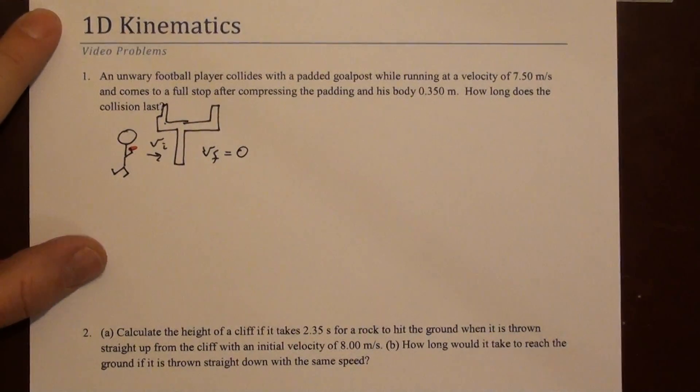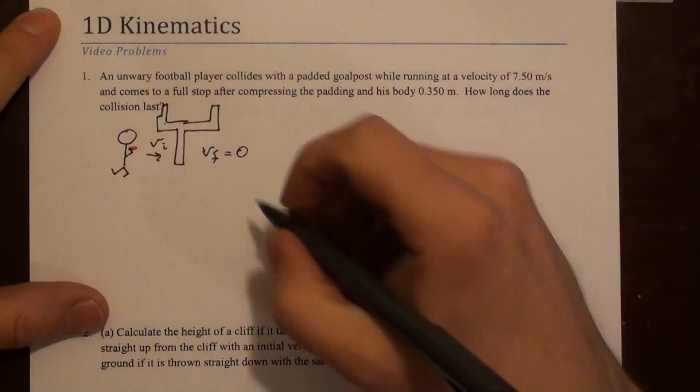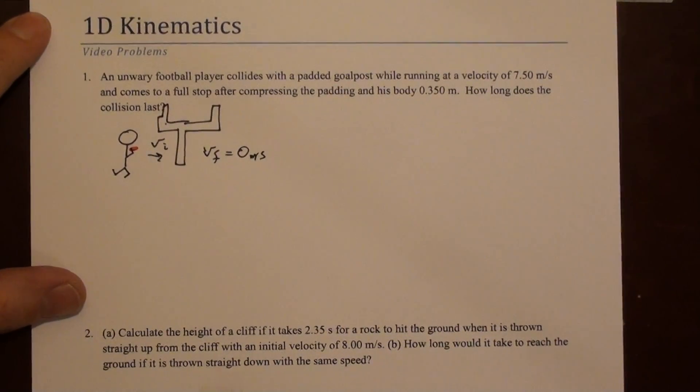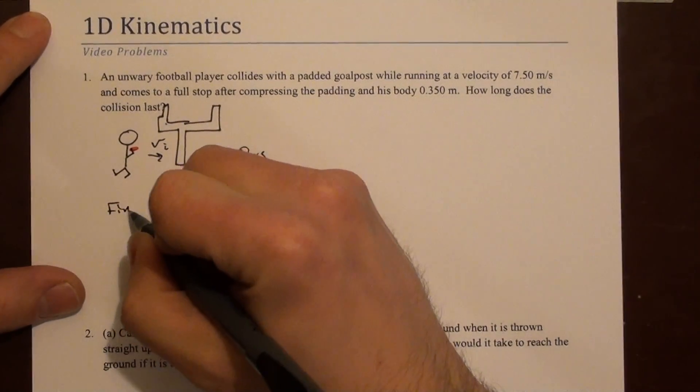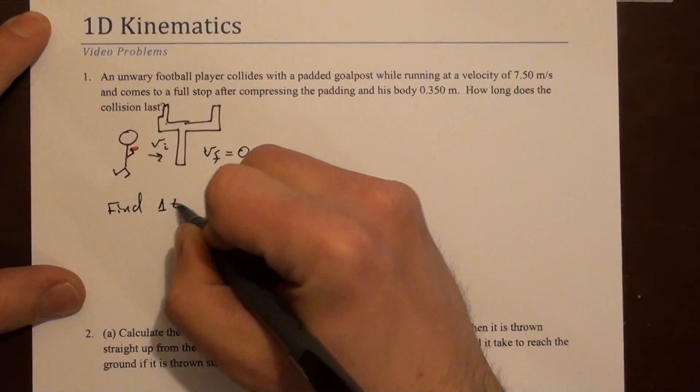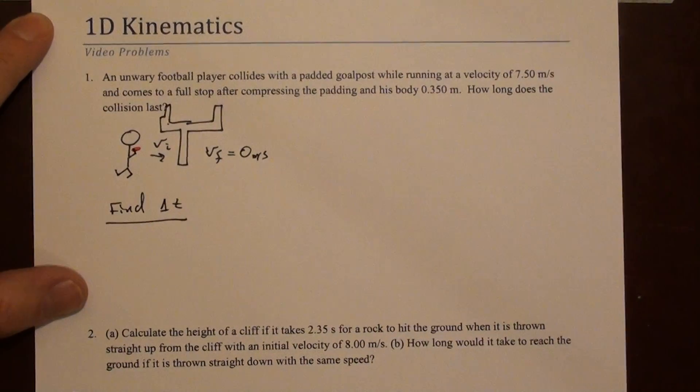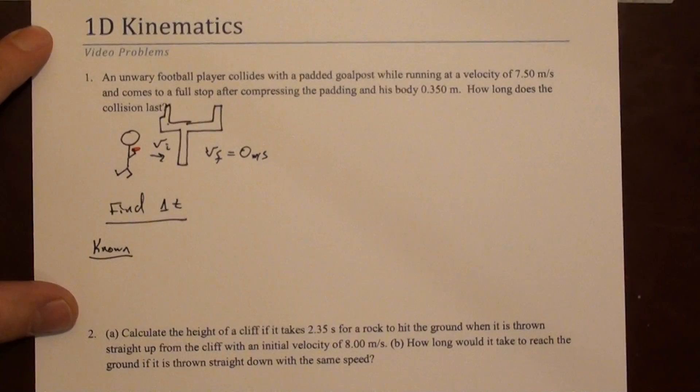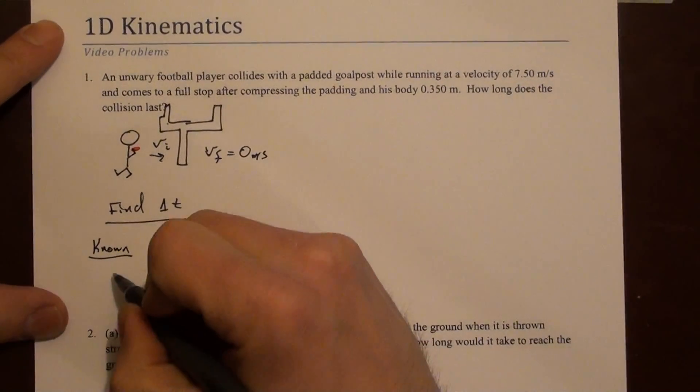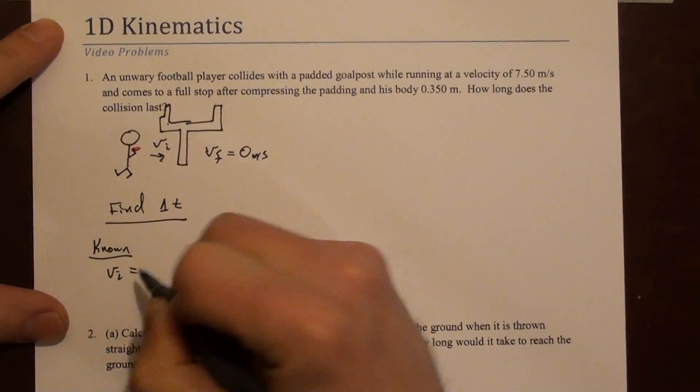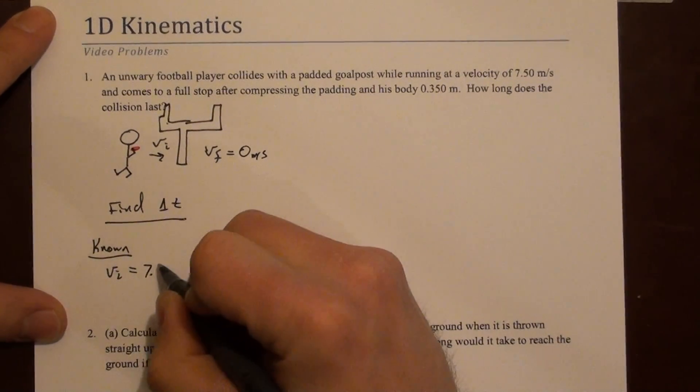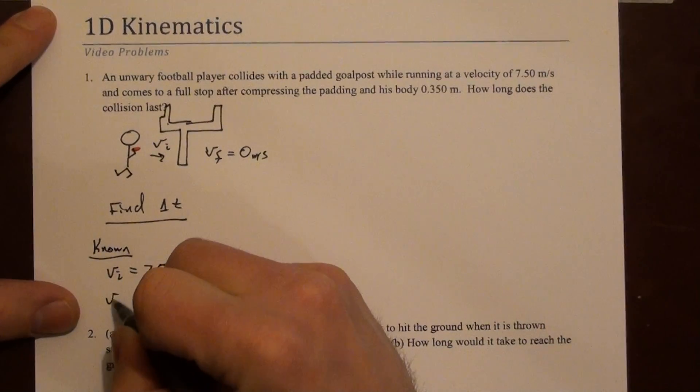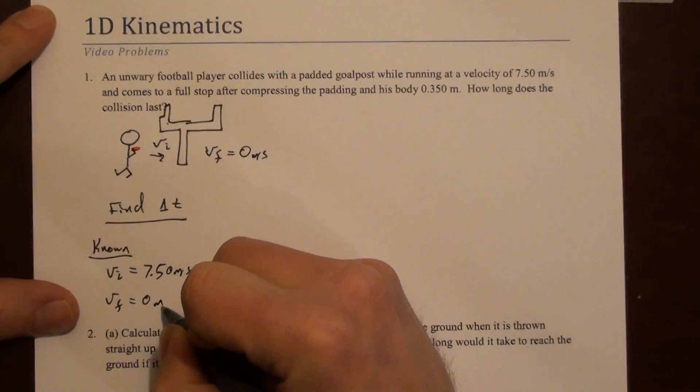A final velocity of 0 meters per second. And we're told to find the time it takes to do this, find delta t. So let's write down the things we know, the known values. We know the initial velocity is 7.5 meters per second.